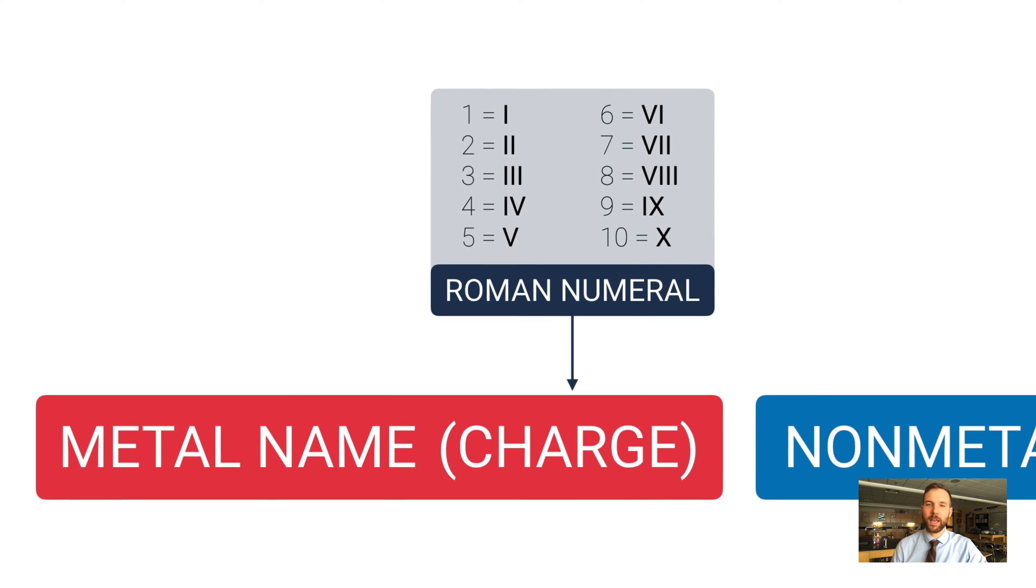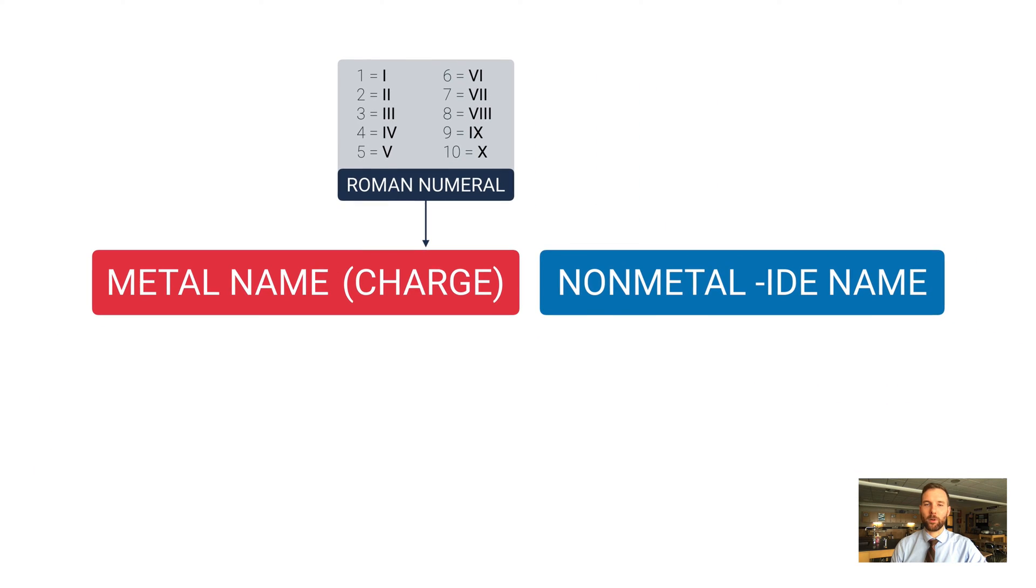If you've forgotten what some of the Roman numerals are, here's one through ten, although we'll only go up to seven. If you're typing answers, use capital I, capital V to represent these—don't put a number.